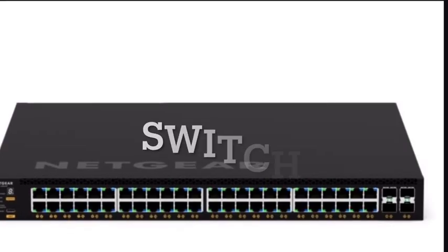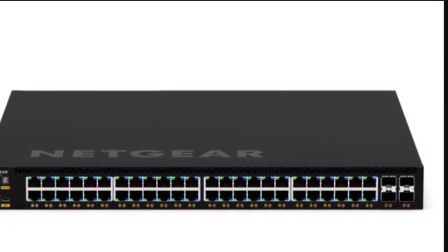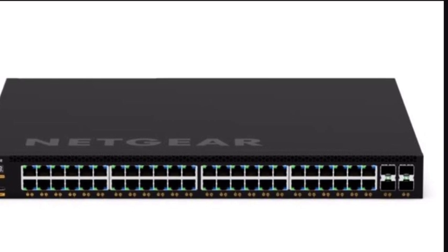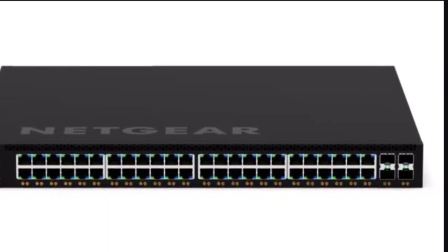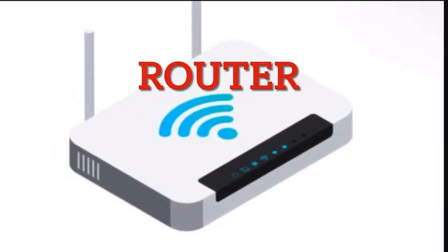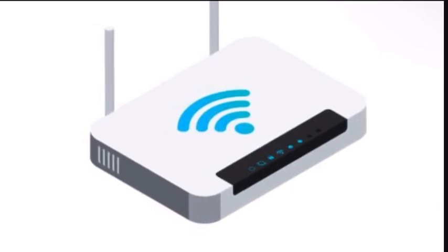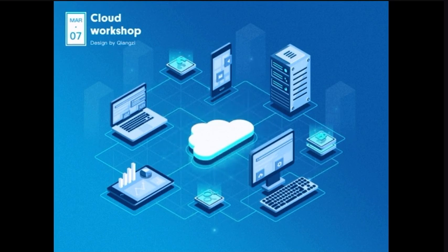Now let's look at the switch. A switch is a networking device that operates at the data link layer or layer two of the OSI model. It connects devices within a LAN and uses MAC addresses to forward data to the appropriate device on the network. Switches are more efficient than traditional hubs because they selectively send data only to the device that needs it, reducing network congestion. A router is a networking device that operates at the network layer or layer three of the OSI model. It connects different networks such as a local network to the internet, using IP addresses to forward data between networks, making decisions based on routing tables. They play a crucial role in directing data packets to their destination across multiple networks. Switches are used within a local network to efficiently connect devices, while routers connect different networks and enable communication between them.